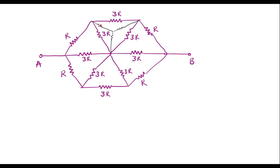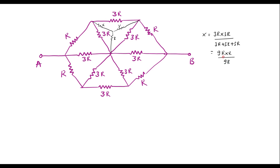Let me assume the value of this resistor is X, value of this resistor is Y, and value of this resistor is Z. So, X can be calculated as: X equals the product of these two, that is 3R × 3R, divided by the sum of these three resistors, that is 3R + 3R + 3R. That gives 9R² divided by 9R, so 9R cancels and the value of X equals R.